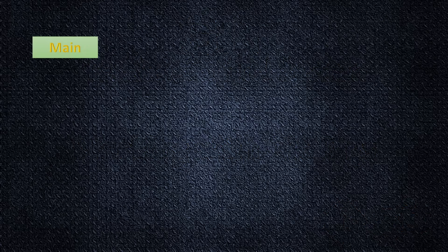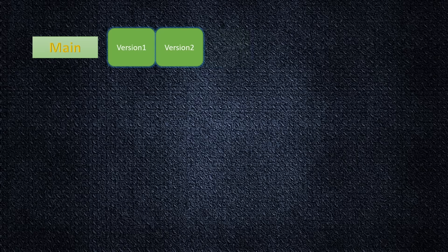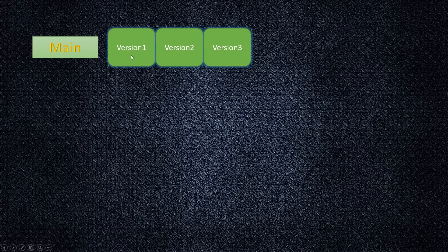Up until now we had the main branch and we had a few commits like version 1, version 2, version 3. All this is basically the comment which we put into our commit. This looks very clean — one commit, one version, all clean and nice — but in the real world things are a little bit different.